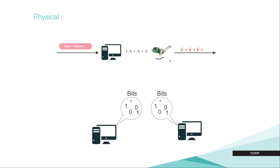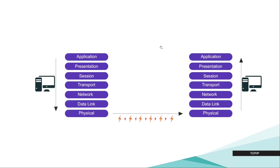So when our desktop tries to send data through the network, the data goes through application, presentation, session, transport, network, data link, and physical. Every layer participates with its own features and header in order to send the data to another computer or receiver.